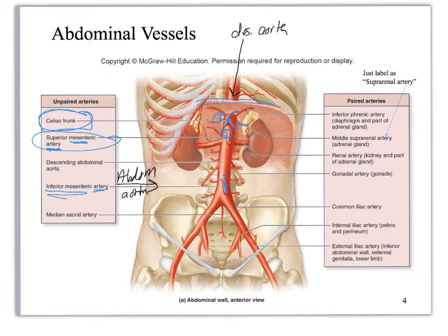The ones on the lateral sides of the aorta: you've got the suprarenal here and here, the renal artery here and here, and the two gonadal arteries. If you know you're dealing with a male, you can call it the testicular artery; if you know you're dealing with a female, you can call it the ovarian artery. Otherwise, we're just going to call them the gonadal arteries. All other branches, we don't care about.